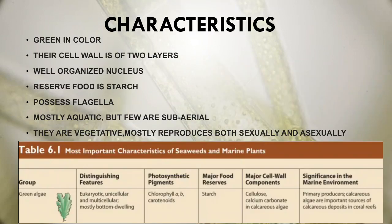Characteristics: they are green in color, their cell wall has two layers, they have a well-organized nucleus, their reserve food is starch, they possess flagella for movement, and they are mostly aquatic but a few are sub-aerial. They mostly reproduce both sexually and asexually through vegetative reproduction.